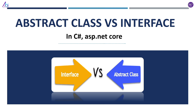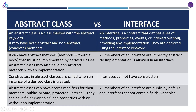There are many differences planned for this video, so let's start. An abstract class is a class marked with the abstract keyword — it may have both abstract and non-abstract (concrete) members. An interface, on the other hand, is a contract that defines a set of methods, properties, events, or indexers without providing any implementation, declared using the interface keyword.